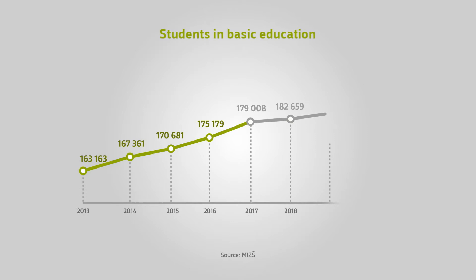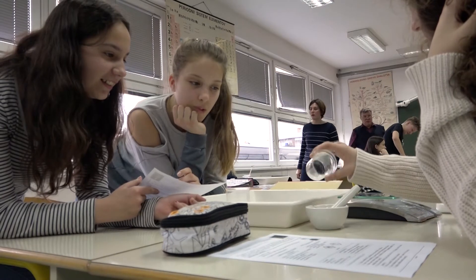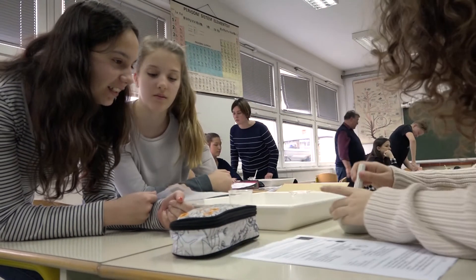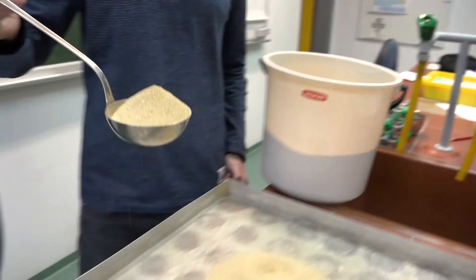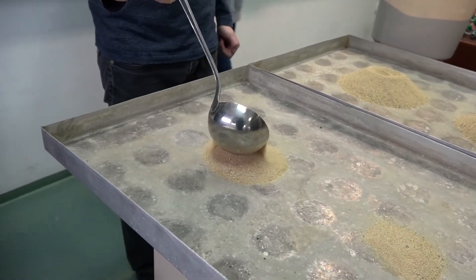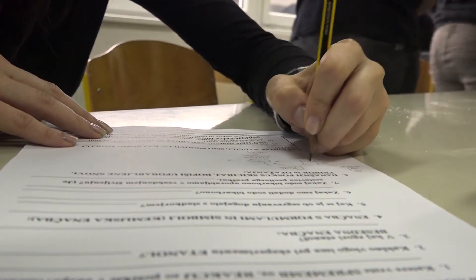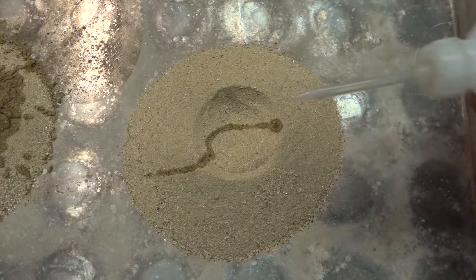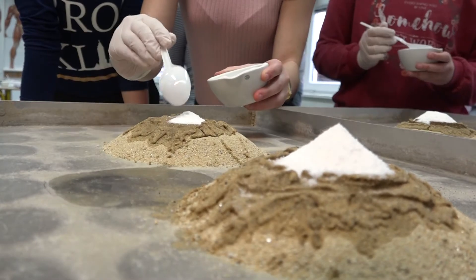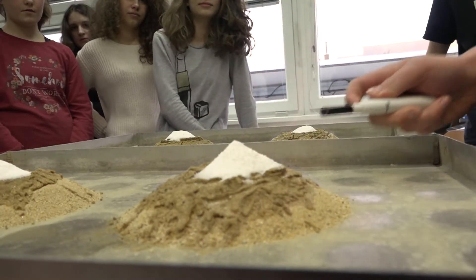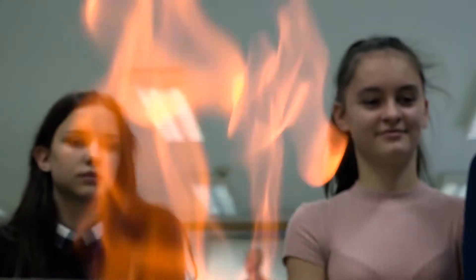Consistent with the growth of generational cohorts, the number of basic school students has been growing too. On average there are 20 students per class; the upper limit is 28 students. The basic school program is determined by timetable and subject curricula for compulsory and optional subjects, as well as various guidelines and concepts. In grades 1 and 2, teachers assess students with descriptive marks; from grade 3 onwards, teachers evaluate the achievement of standards of knowledge and award numerical marks.